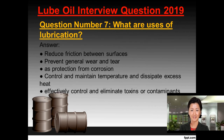Question number seven: What are the uses of lubrication? Answer. Lubrication helps to: reduce friction between surfaces, prevent general wear and tear, provide protection from corrosion, control and maintain temperature and dissipate excess heat, and effectively control and eliminate toxins or contaminants.